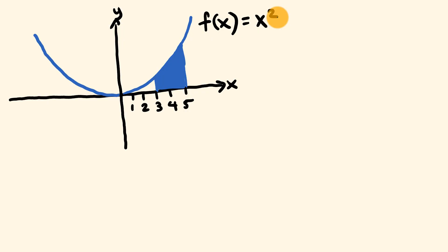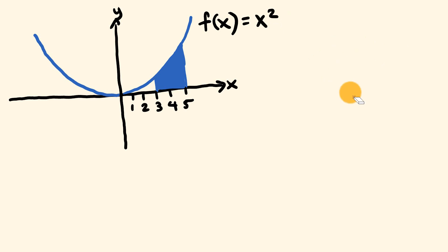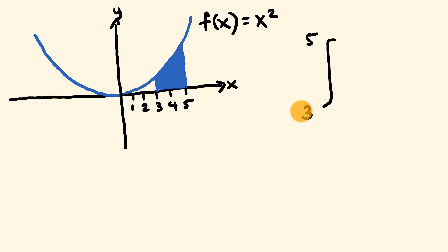As long as we have a description of this function, we can use calculus to find the area. Functions can be used to describe all sorts of different curves and it gets more complex as we go along, but we'll start out simply. The way we solve for this particular area is using the integral symbol, and we're going to be working out the bound area between 5 and 3 for the function x squared — that's what the dx means. So we're going to use this setup to solve for the bound area.